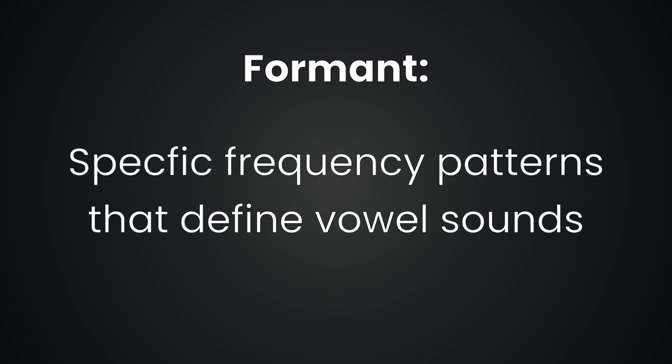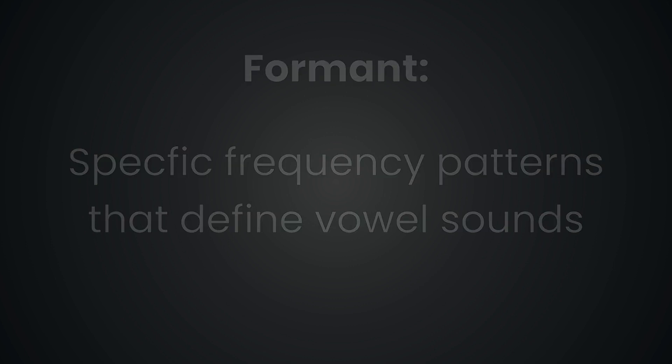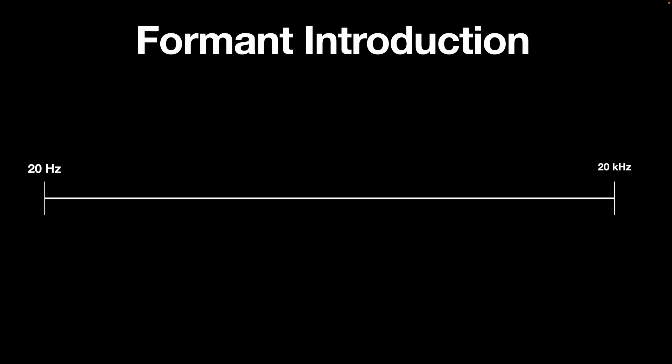A formant is a resonance within a sound's frequency spectrum. In human speech, formants are specific frequency patterns that define vowel sounds. These formants result from the shape of the vocal tract, such as the position of the tongue and mouth as air passes through it. Each vowel sound has a unique formant that distinguishes it from others. These vowel sounds exist in frequency areas that are an octave apart, and this is super helpful because it means we can identify frequency ranges by their vowel sound. Understanding and recognizing vowel sounding formants is essential for developing your critical listening skills.